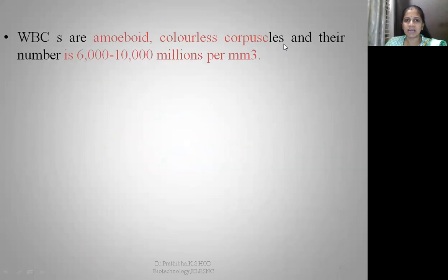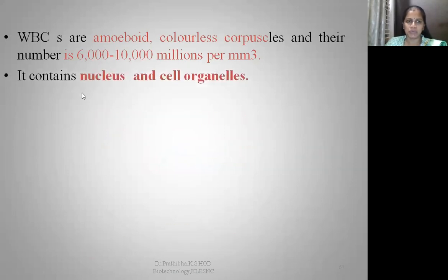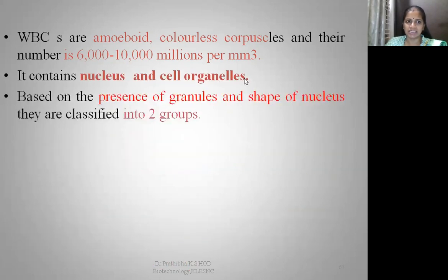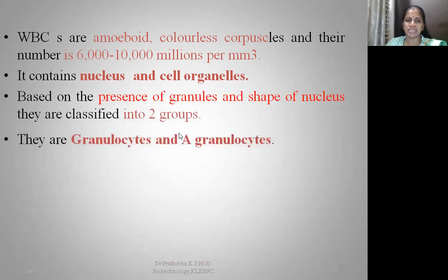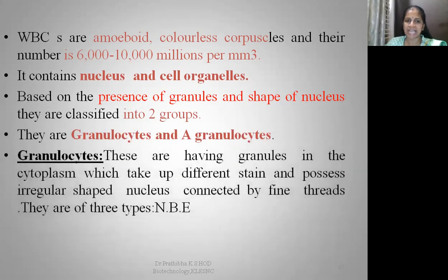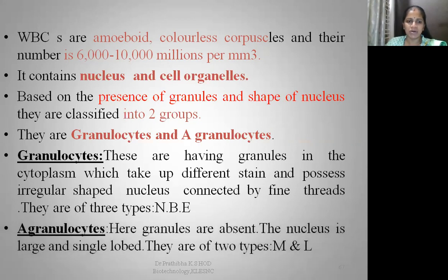WBCs are amoeboid, colorless corpuscles whose number varies from 6,000 to 10,000 per mm³. They contain a nucleus and cell organelles. Based on the presence of granules and shape of the nucleus, they are divided into two groups: granulocytes and agranulocytes. Granulocytes have granules in the cytoplasm which take up different stains, and possess a regular-shaped nucleus connected by fine threads. They are of three types: neutrophils, basophils, and eosinophils. Agranulocytes have no granules, a large single-lobed nucleus, and are of two types: monocytes and lymphocytes.